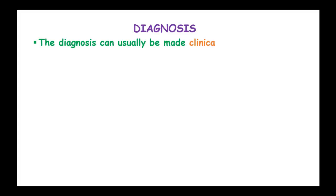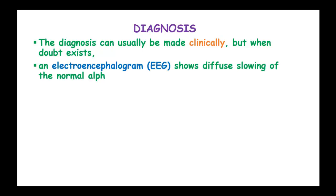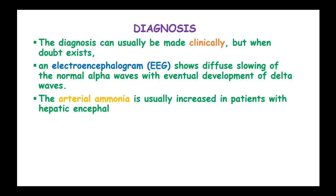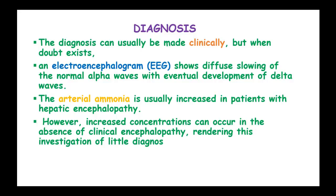The diagnosis of hepatic encephalopathy can be made clinically, but when doubt exists, an electroencephalogram shows diffuse slowing — normal alpha waves give way to the development of delta waves. Arterial ammonia is usually increased in patients with hepatic encephalopathy; however, increased concentration can occur in the absence of clinical encephalopathy, rendering this investigation of limited diagnostic value.